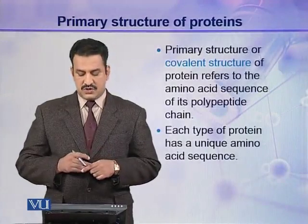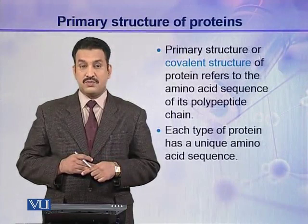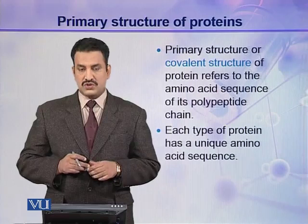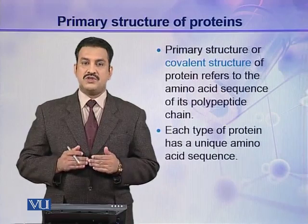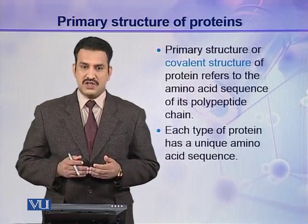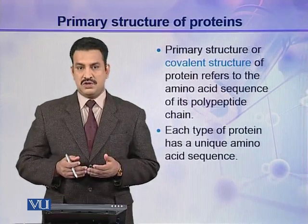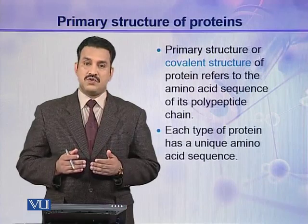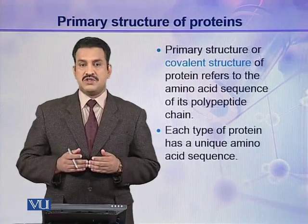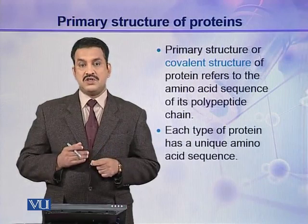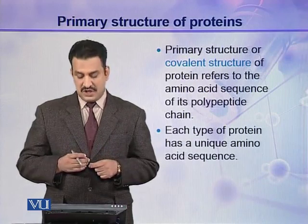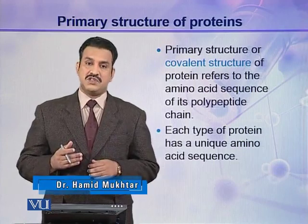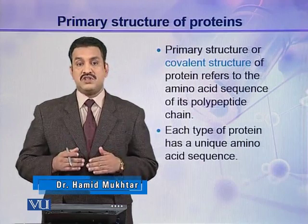Primary structure is also called the covalent structure of proteins, and it refers to the amino acid sequence of its polypeptide chain. There are thousands of proteins present in nature, and all proteins are different from each other. They differ only on the basis of their amino acid sequence — every protein has a unique amino acid sequence, and if this sequence is changed, the protein is entirely changed.